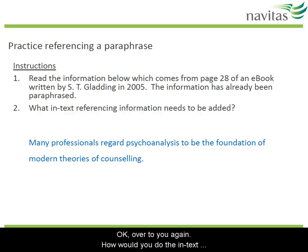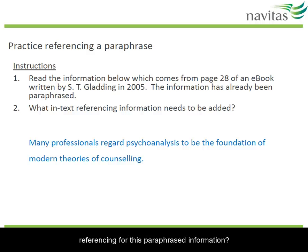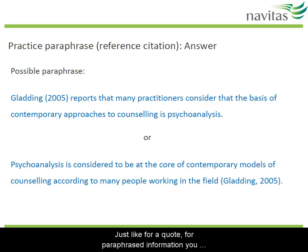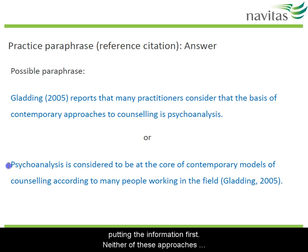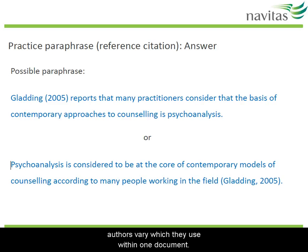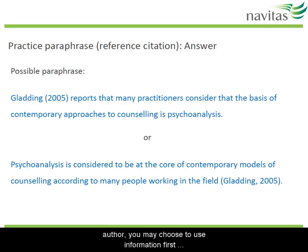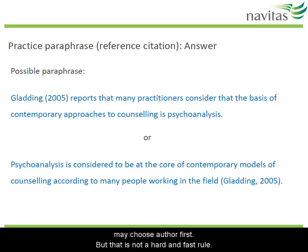Over to you again. How would you do the in-text referencing for this paraphrased information? Pause the recording. Just like for a quote, for paraphrased information you have two options: putting the author first or putting the information first. Neither of these approaches is more correct than the other, and most academic authors vary which one they use within one document. However, if the information is more important than the author, you may choose information first. If the author is important, you may choose author first, but that's not a hard and fast rule.